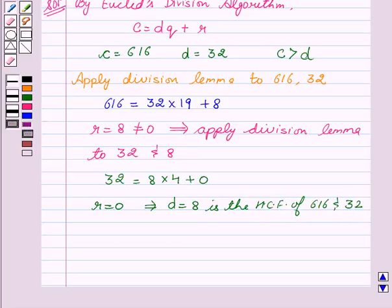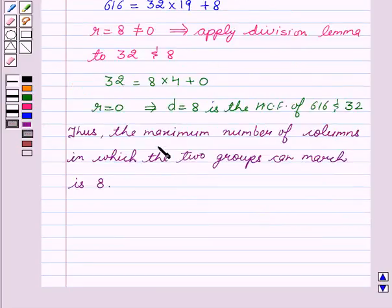Thus, the maximum number of columns in which the two groups can march is 8. Hope you understood the solution and enjoyed the session.